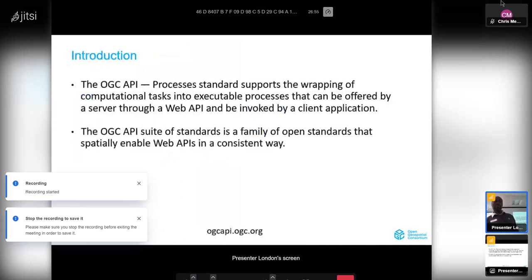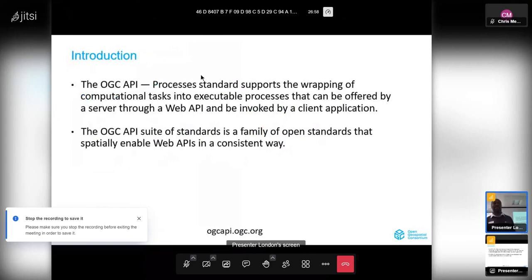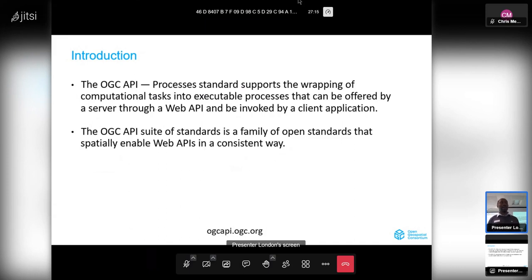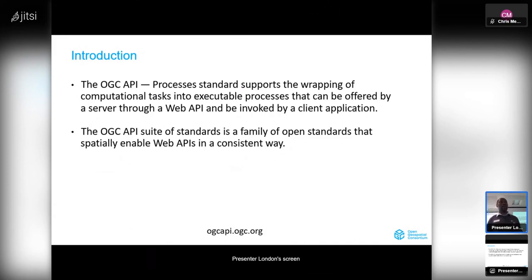OGC API Processes is a standard that defines a way of wrapping computational tasks — algorithms — within an executable process that a server can offer on a network or in the cloud, but also processes that client applications can execute across a network. If you've used the previous generation of OGC standards, you might remember the Web Processing Service standard, or WPS. OGC API Processes is the successor to that — a RESTful approach for doing many of the same things.